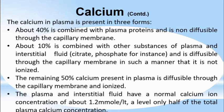Calcium in plasma is present in three forms. About 40% is combined with plasma proteins and is non-diffusable through the capillary membrane. About 10% is combined with other substances of plasma and interstitial fluid and is diffusable through the capillary membrane but is not ionized. The remaining 50% calcium present in plasma is diffusable through the capillary membrane and ionized. The plasma and interstitial fluid have a normal calcium ion concentration of about 1.2 mmol per liter — only half of the total plasma calcium concentration.